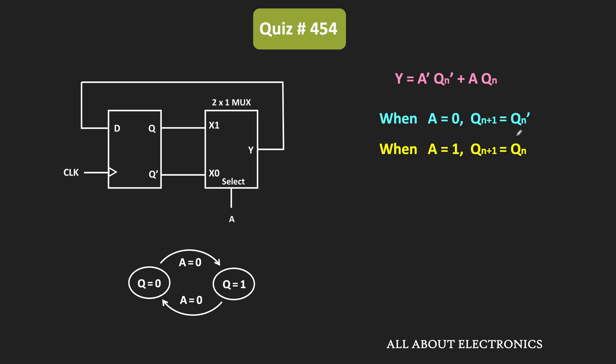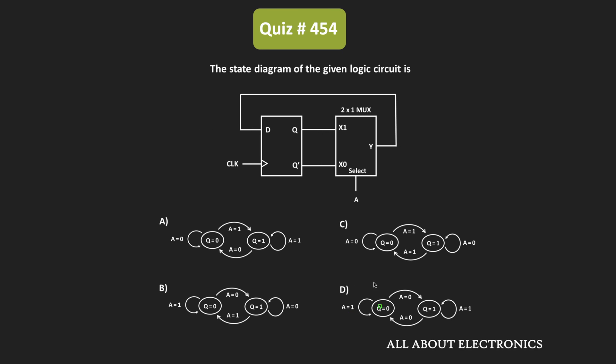On the other hand, when A is equal to 1, the next state of the flip-flop is the same as the present state. So if the output is 0 and A is 1, it will remain in the same state. Likewise, for Q equal to 1 and A equal to 1, it will also remain in the same state. So this is the state diagram of the given circuit, and for the given question, option D is the correct answer.